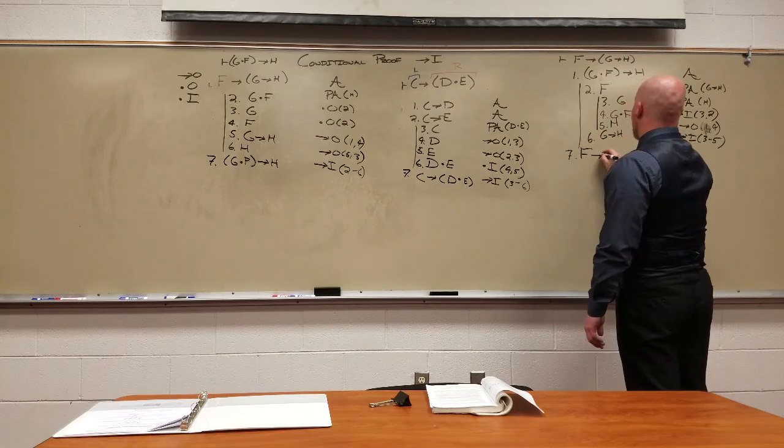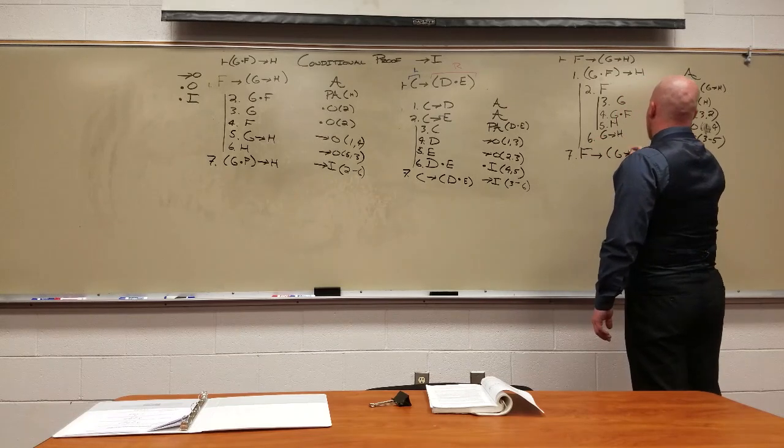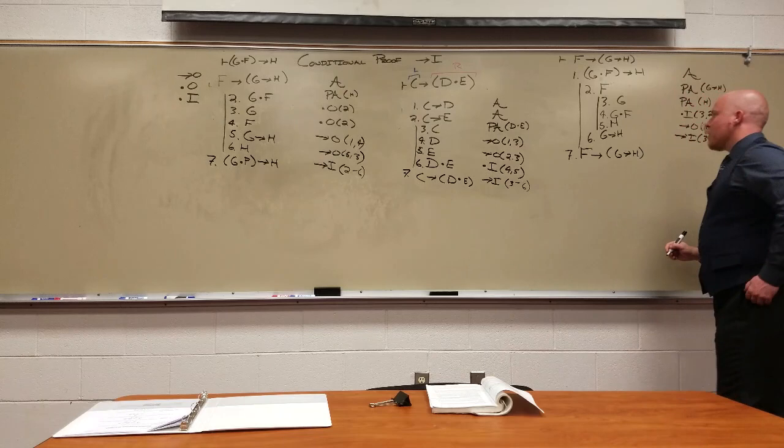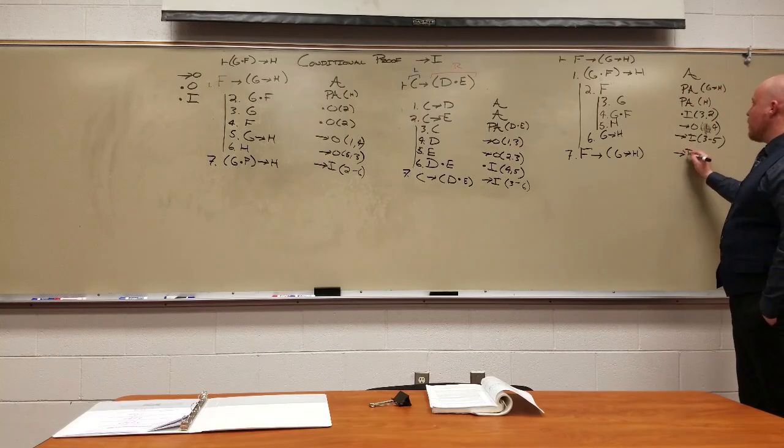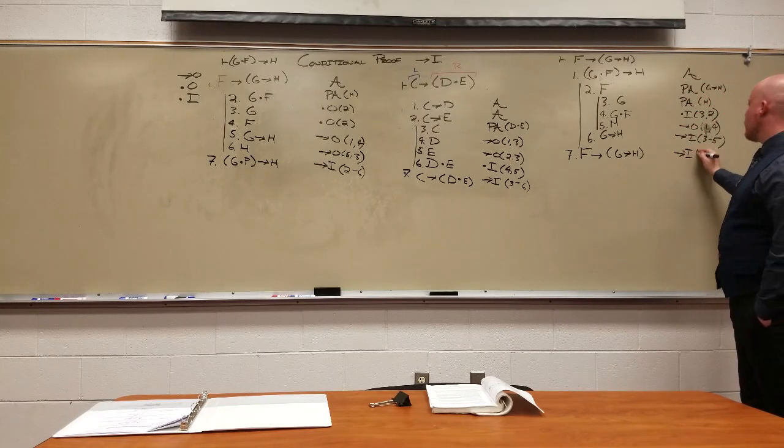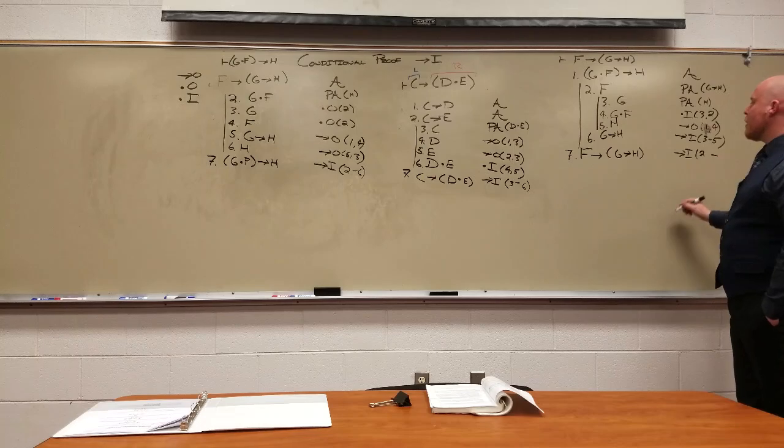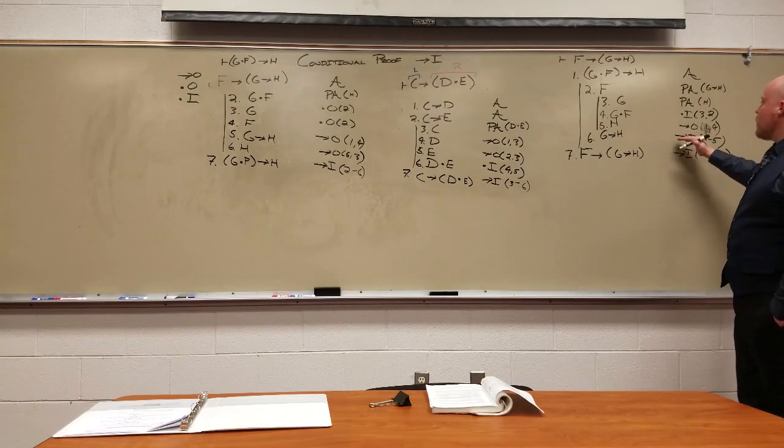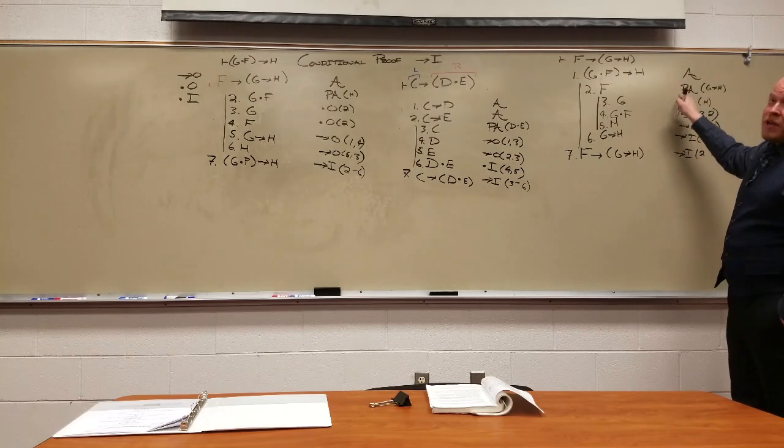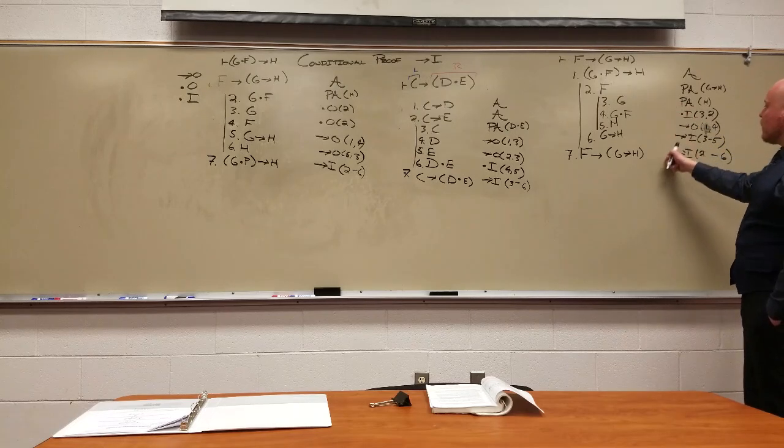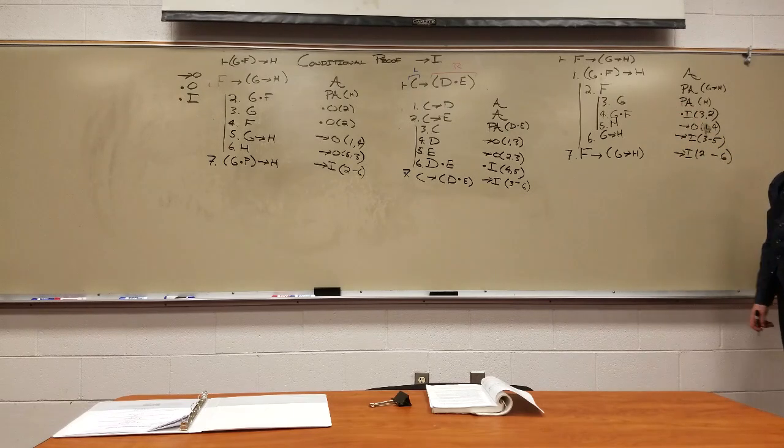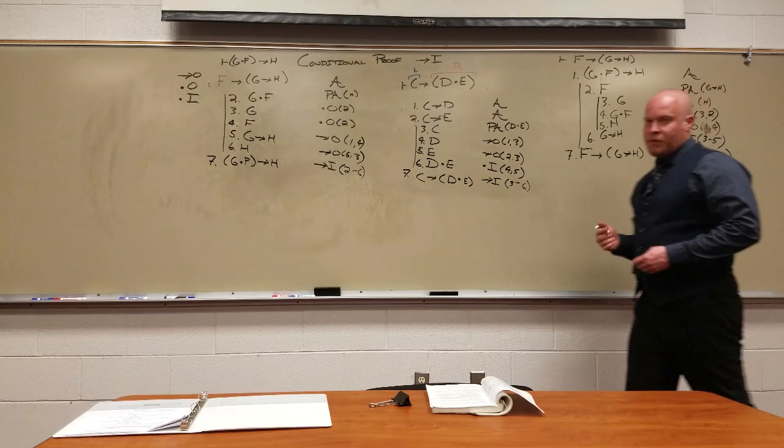If you've got F, you can get G arrow H. How do we get that? Also an arrow in. Where did we provisionally assume the left side? In this case, two. Where do we get the right? Line six. So arrow in, arrow in. If you have two PAs, at this point, you should also have two arrow ins. It's a sub-proof within a sub-proof, but the principles remain the same.